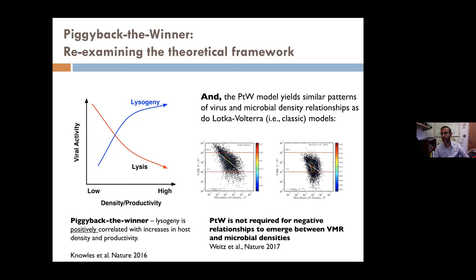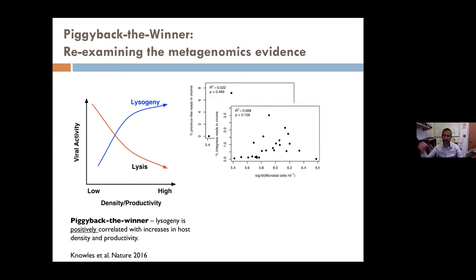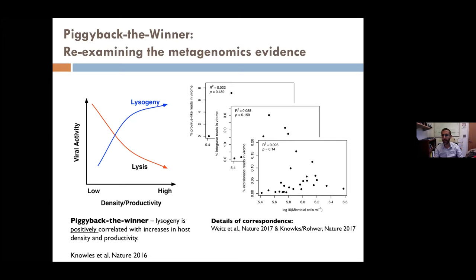The piggyback-the-winner group also looked directly at metagenomic evidence — what fraction of virus particles in the viral fraction carried provirus-like reads or hallmarks of being temperate (integrases, excisionases) — and claimed this went up. Our re-analysis shows there is not much of a relationship in these provirus-like reads. In our view, neither the metagenomics nor the abundance data directly support evidence for piggyback the winner — but notably, it doesn't go down either. There is an absence of evidence for a particular relationship.